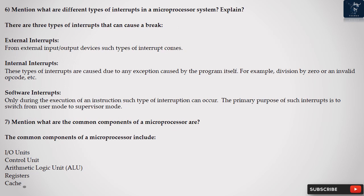Software Interrupts: Only during the execution of an instruction such type of interruption can occur. The primary purpose of such interrupts is to switch from user mode to supervisor mode.